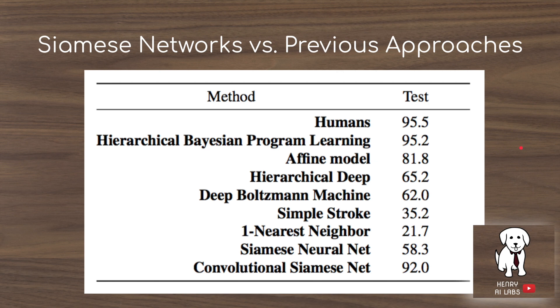They present how their Siamese network compares with other techniques for Omniglot classification. Humans achieved this score, and the original authors proposed hierarchical Bayesian program learning. The difference between this, which outperforms convolutional Siamese network, is that it has a sense of a generative model - how the characters are constructed and drawn. The Siamese network is able to do it without any generative model.